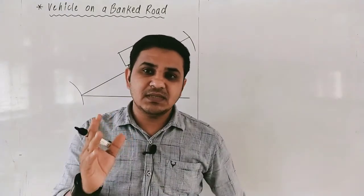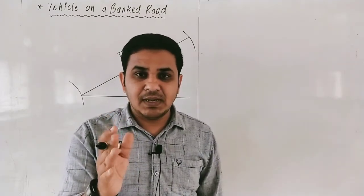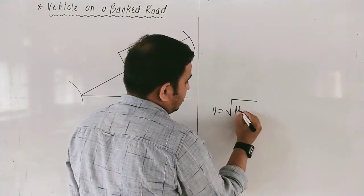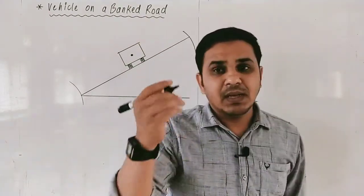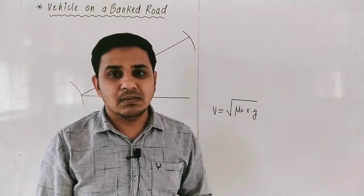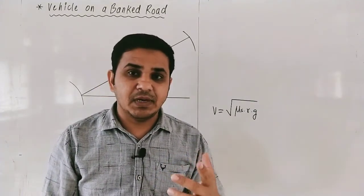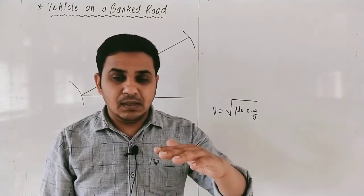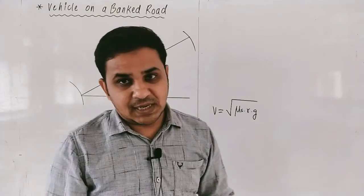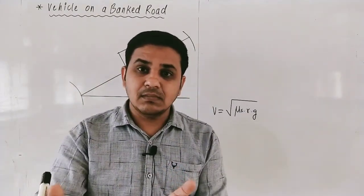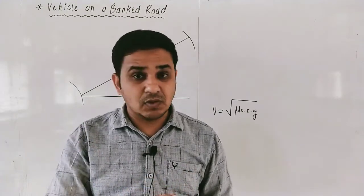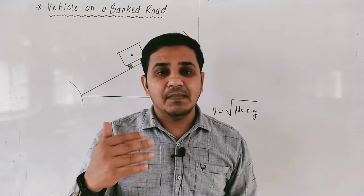In the previous lecture, we calculated the safe speed of a car moving along a horizontal road as V equals the square root of mu-s times r times g. This safe speed depends on mu-s, the coefficient of static friction between the tyre of the vehicle and the surface of the road. However, we cannot rely on the force of static friction when taking a turn and performing circular motion, because this force has a certain maximum limit.